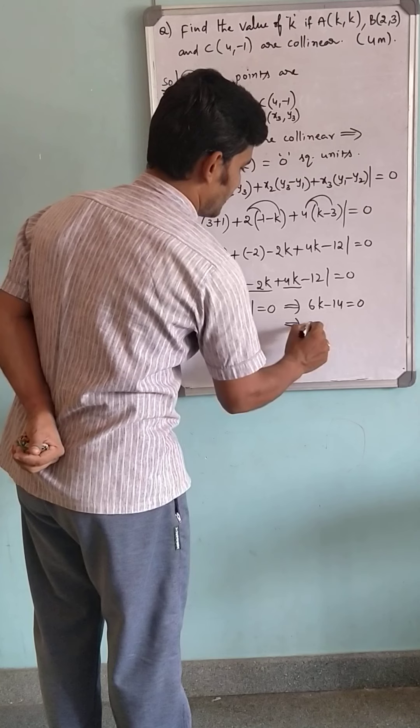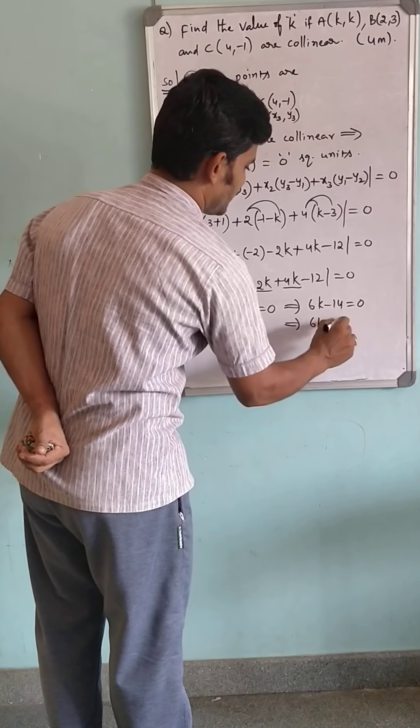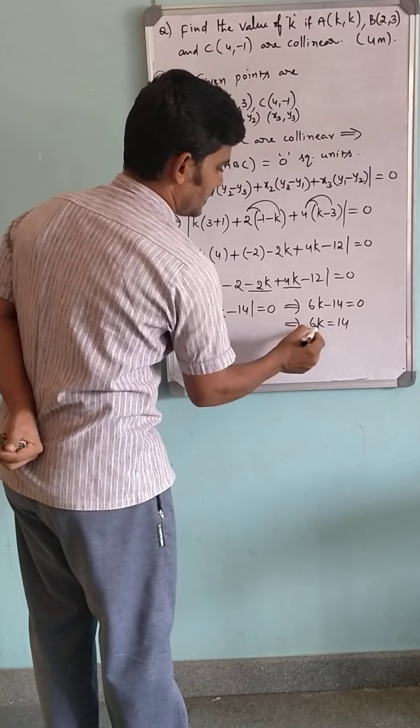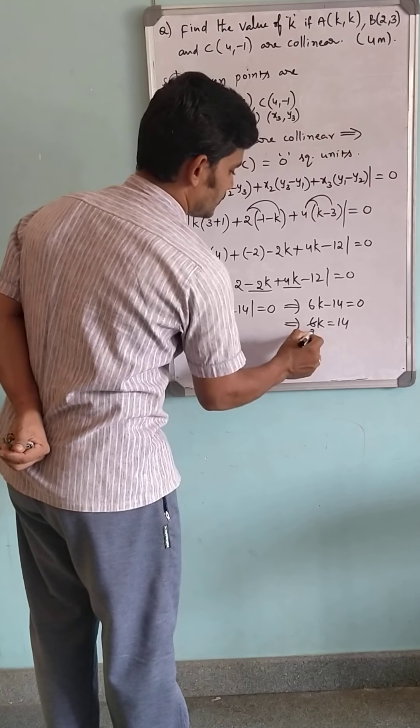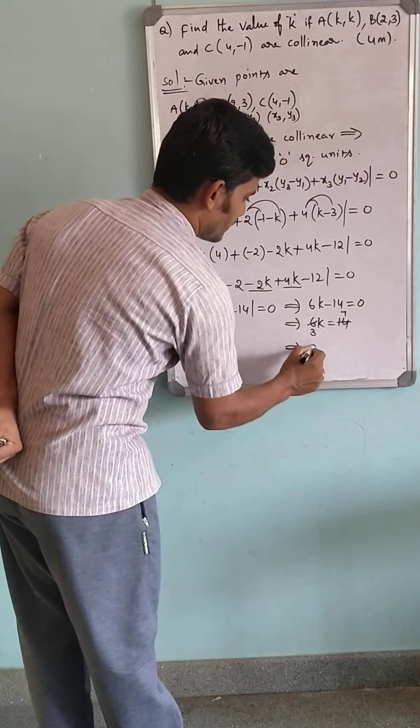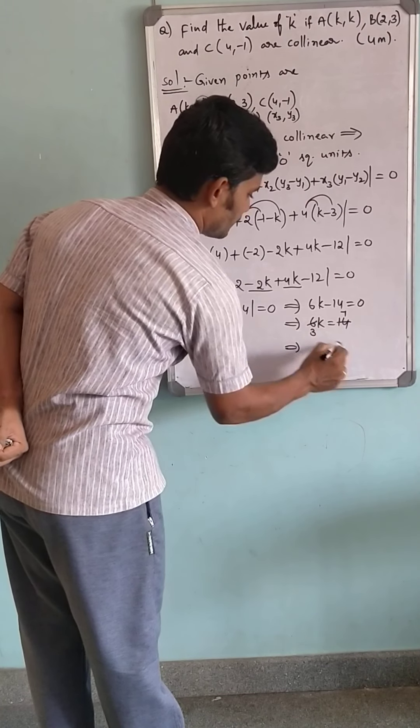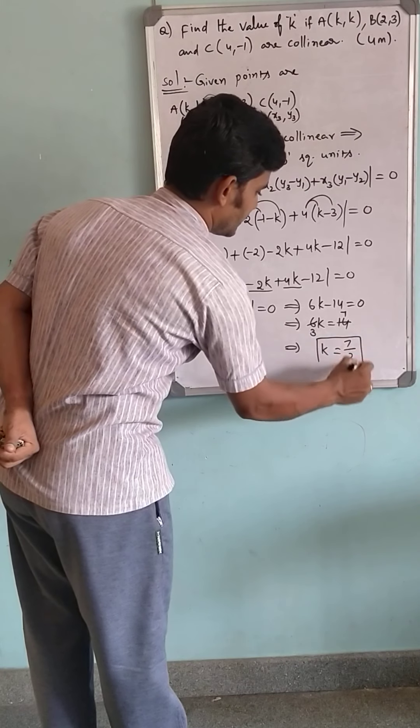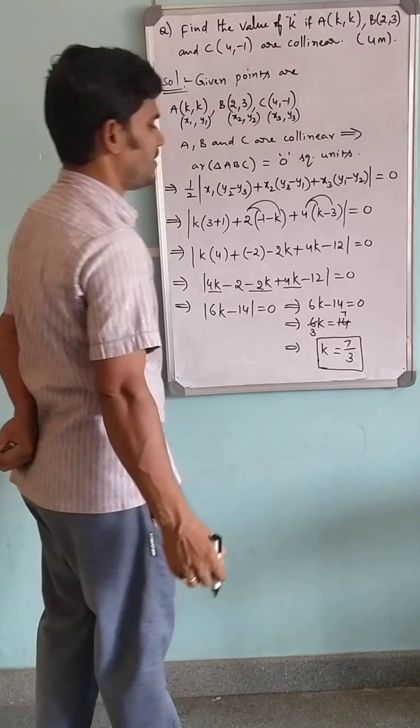Which would imply 6K is equal to 14. 6 is multiplying, it will divide. After cancellation, K is equal to 7 by 3.